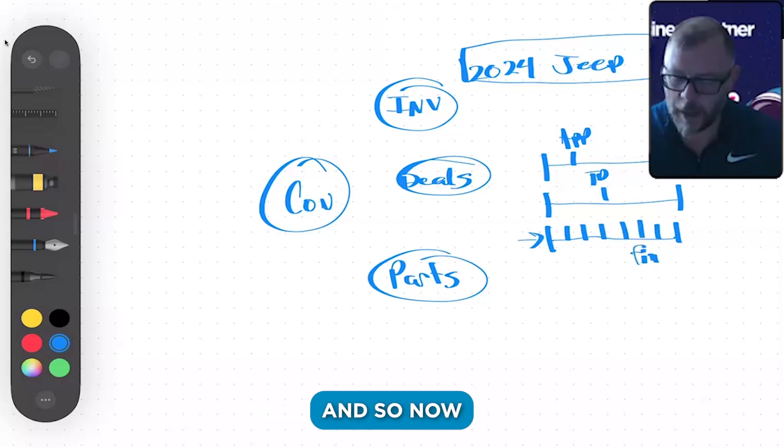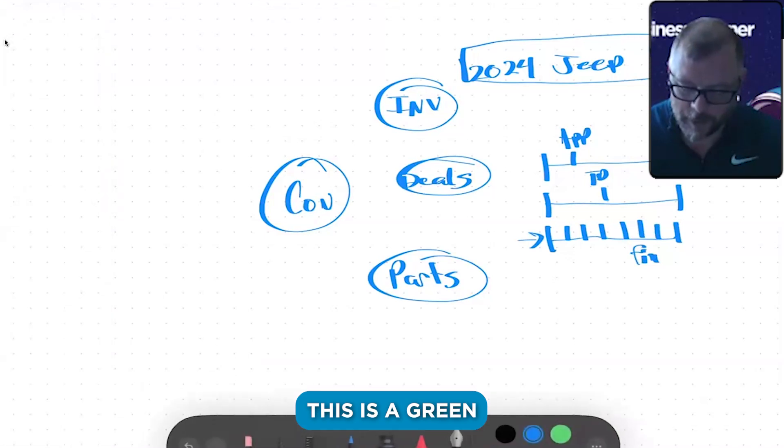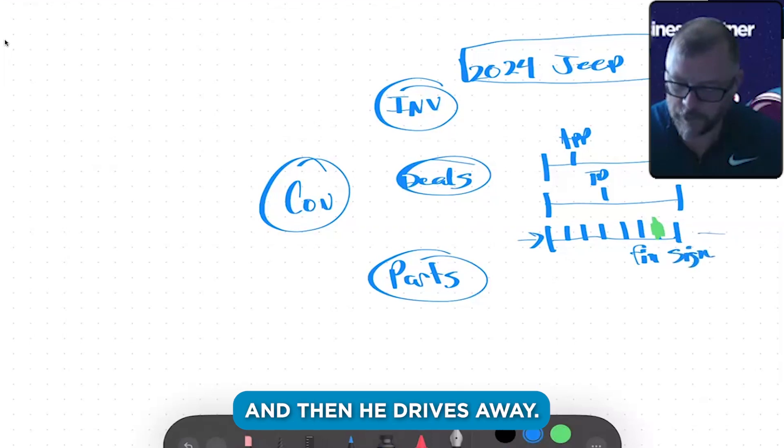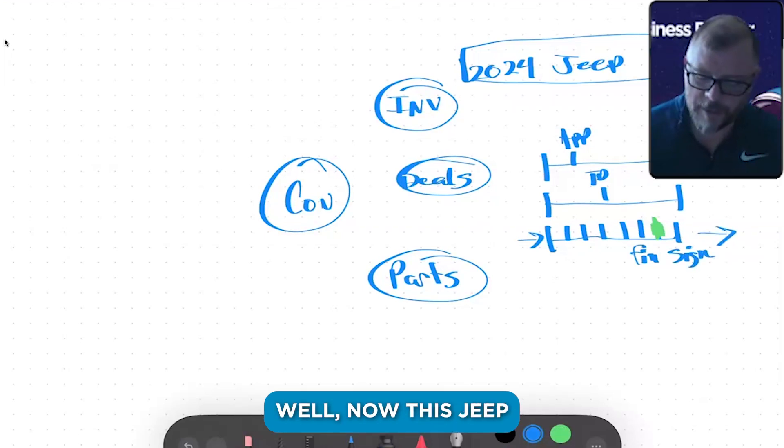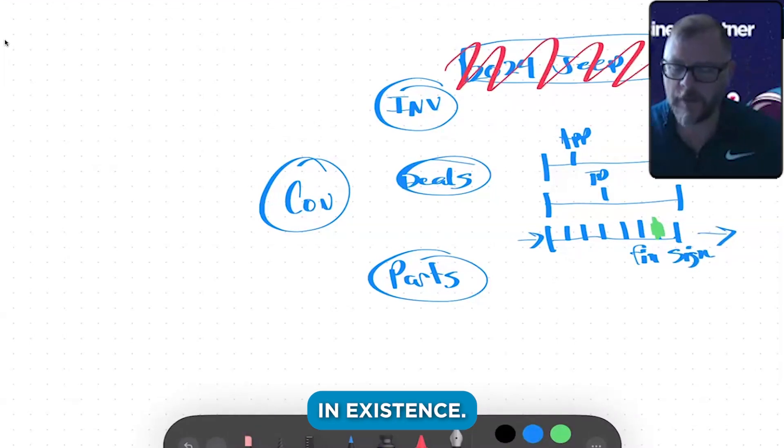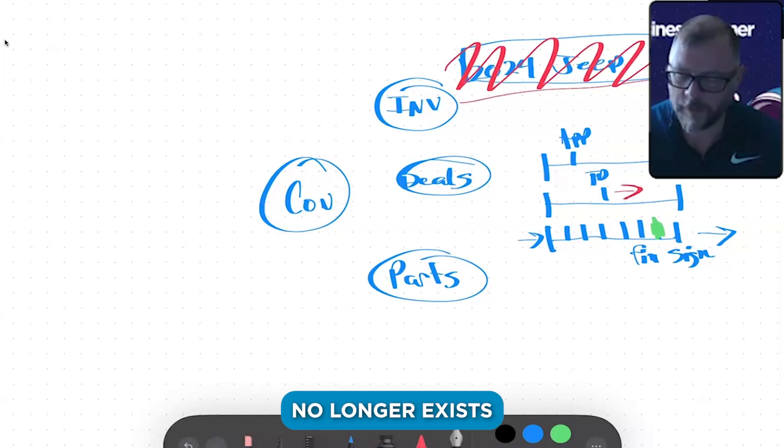Gets approved, and so now this is green, kind of green for go, because he's approved on financing. And so then all he has to do is come in and sign and then he drives away. Well, now this Jeep is no longer in existence.